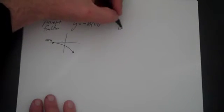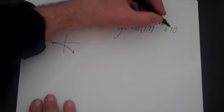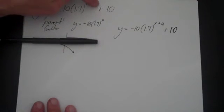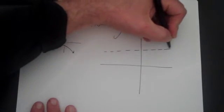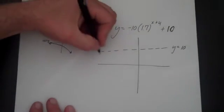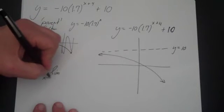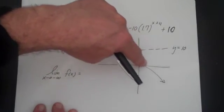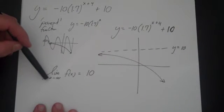Instead of the parent function, let's look at the actual function: y equals negative 10 times 1.7 to the (x plus 4), plus 10. We're really concerned about the asymptote and the general shape. The asymptote starts at y equals zero. The h doesn't affect the asymptote at all; the 10 does, so the new asymptote is y equals 10. The graph shifts left 4 and up 10. The limit as x goes to negative infinity: as x goes toward negative infinity, y gets closer and closer to the asymptote, which is 10. So the limit is 10.